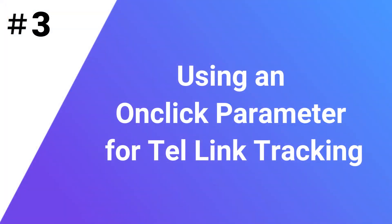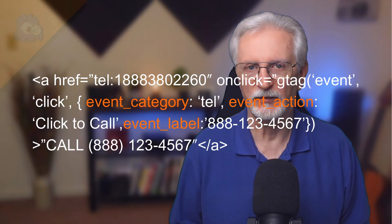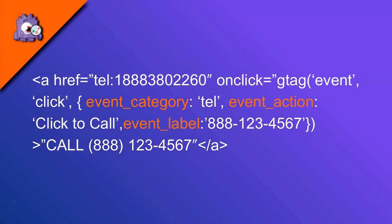The other method you can use is to create a custom event tracking code using an OnClick parameter. Keep in mind this requires editing and inserting code on your site. You'll need to define variables like Category and Action in the code. For Category, enter "Tel" as the event name. For Action, give the interaction a name like "Click to Call." For the Label, enter the phone number you want to track. Once you've entered those details in your OnClick parameter, your new code should be ready, and Google will begin tracking your phone number clicks.